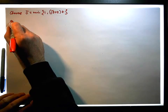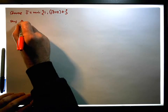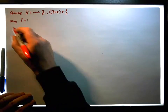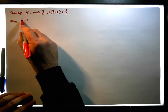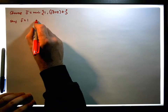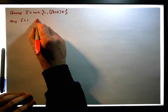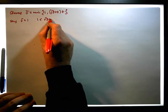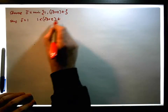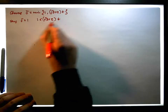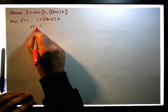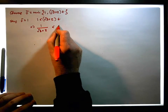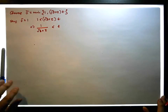Let's say delta equals one — that's case one. Well, this implies that one must be less than the square root of three plus two times epsilon, which implies that one over the square root of three plus two must be less than epsilon.